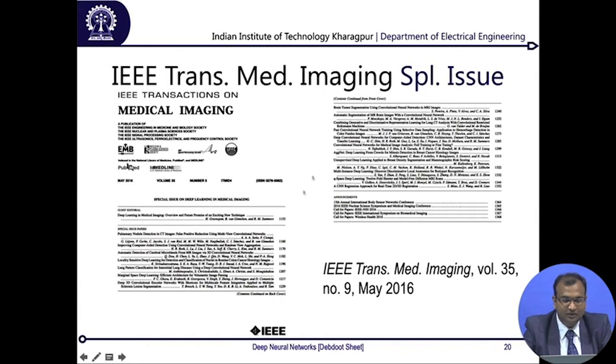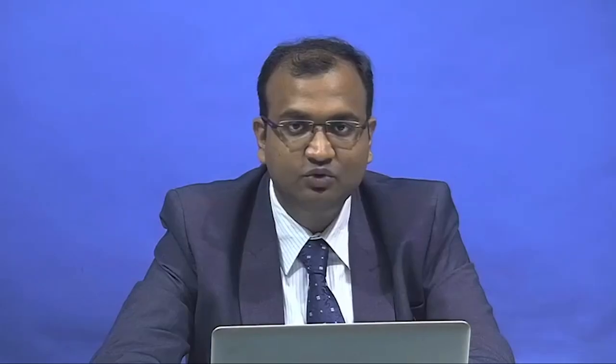There was an IEEE Transactions on Medical Imaging special issue in May 2016 entirely devoted to deep neural networks for medical image analysis, covering microscopy, MRI, brain imaging, histology, and robotic surgery. It is a good collection of papers I would recommend as a starting point for understanding where and how deep neural networks have been used in medical image analysis.